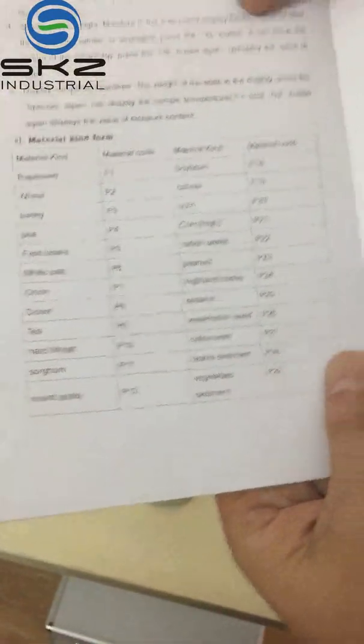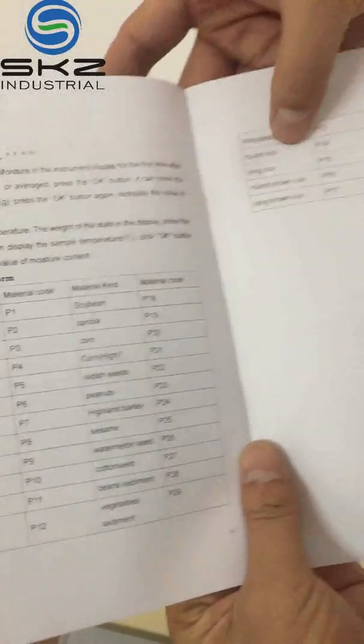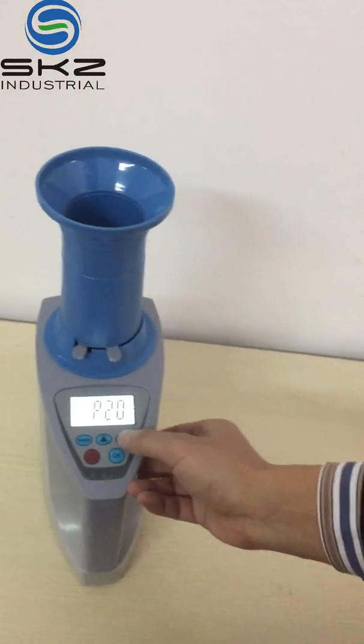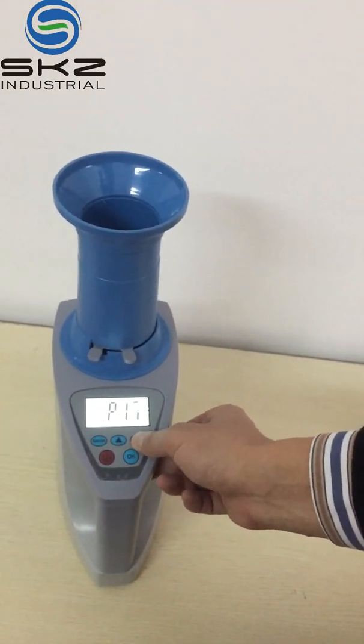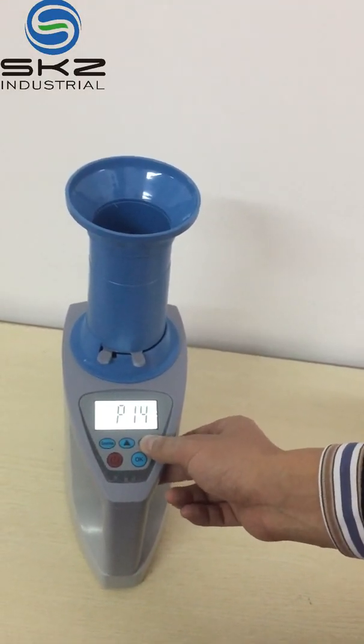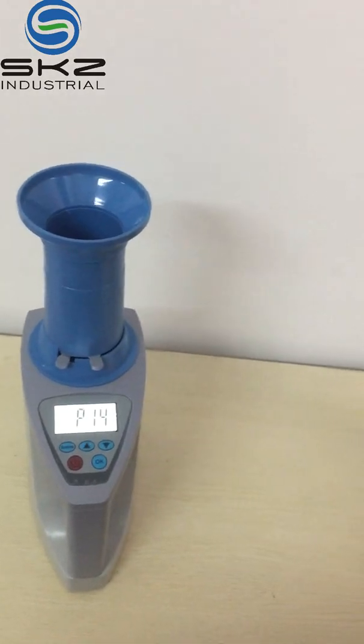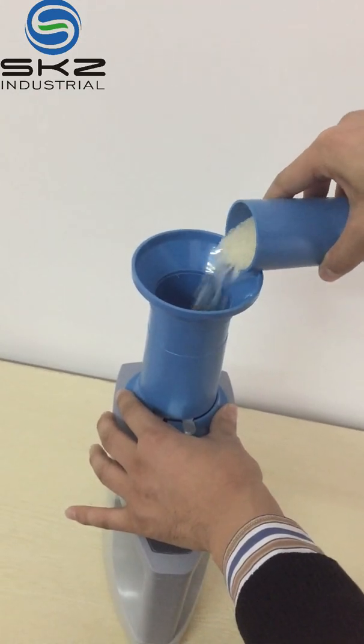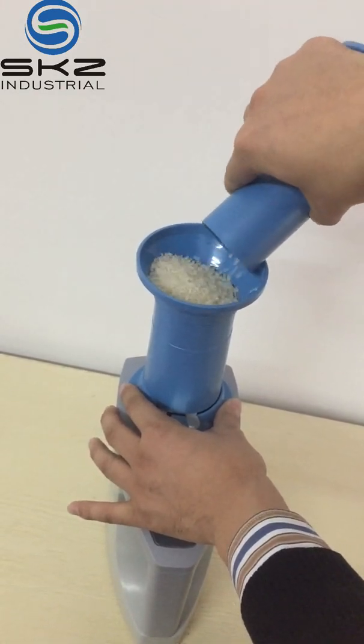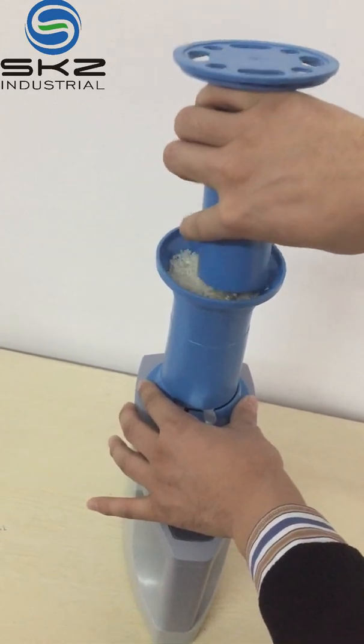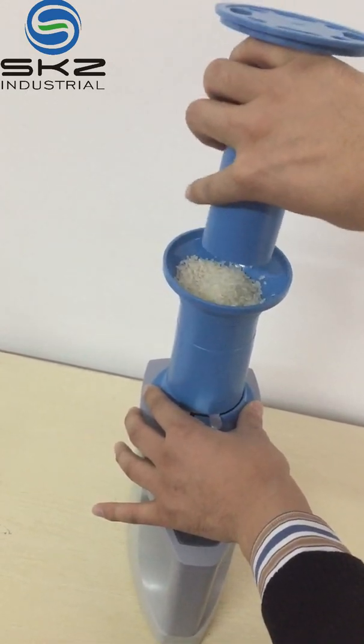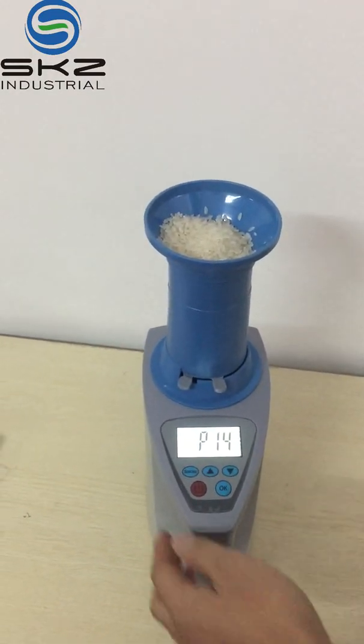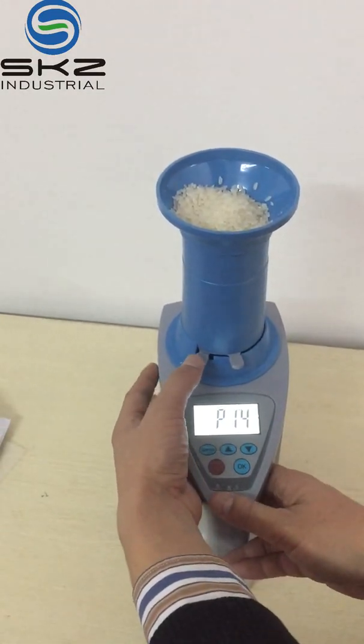For example, we measure the rice with the P14. OK. Then we put the rice to the sample belt. Then press this button.